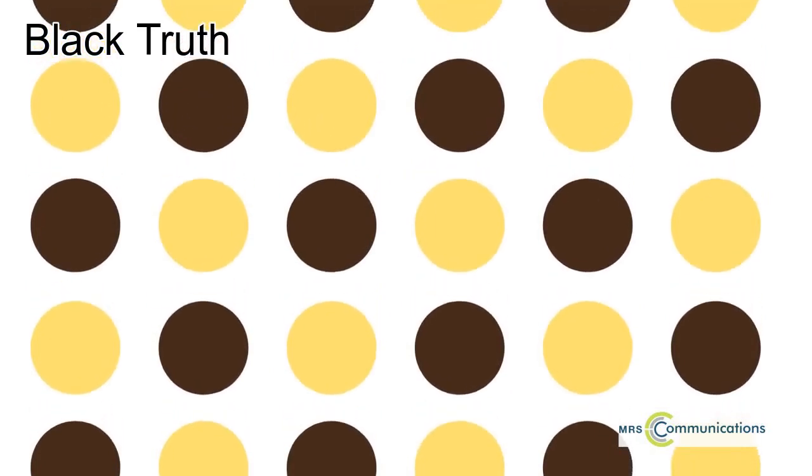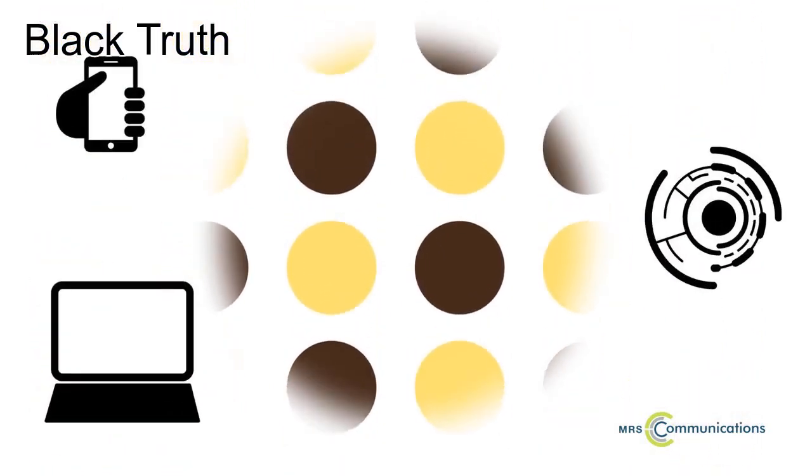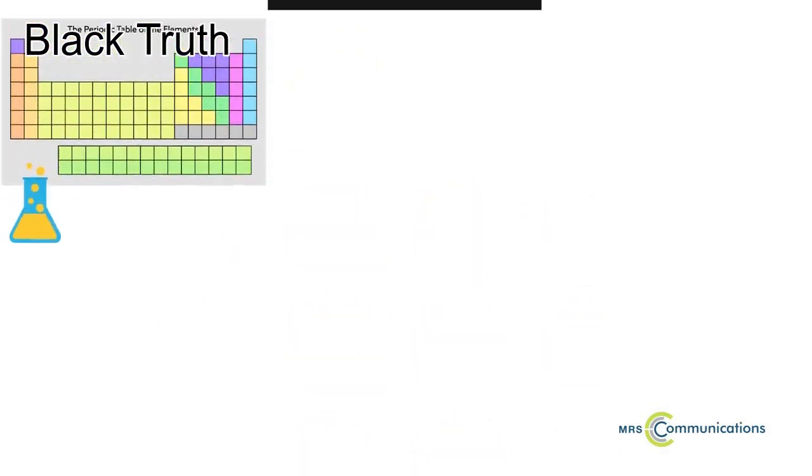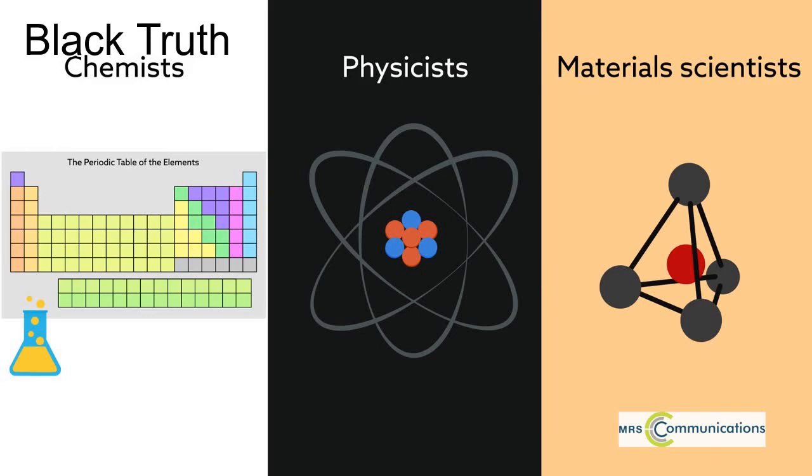Researchers are still learning how melanin behaves when surrounded by the machinery that makes useful electronics work. But continued efforts from chemists, physicists and material scientists are likely to result in exciting new applications for this highly versatile molecule.